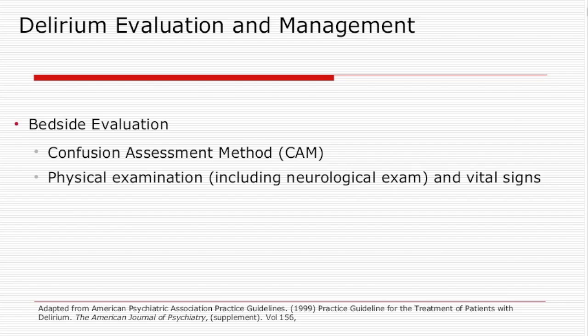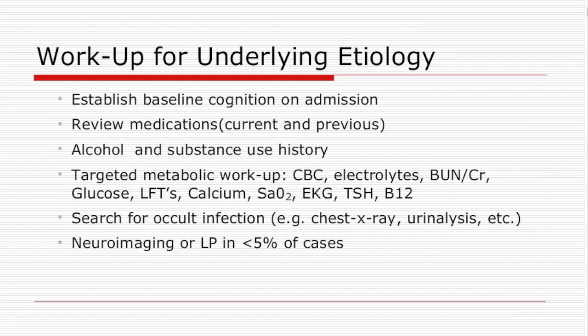A good history and physical exam will give you about 90% of the diagnosis. Establish a good baseline for cognitive assessment on admission. If you don't have that, use family members to provide background about the patient's cognition — whether the patient has had dementia or been forgetful. Review medications periodically with the patient, as some get discontinued abruptly on admission or patients get put on new medications that can precipitate delirium.